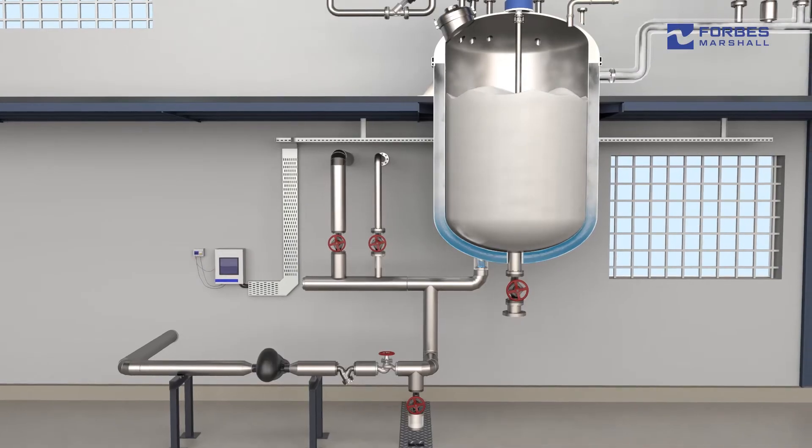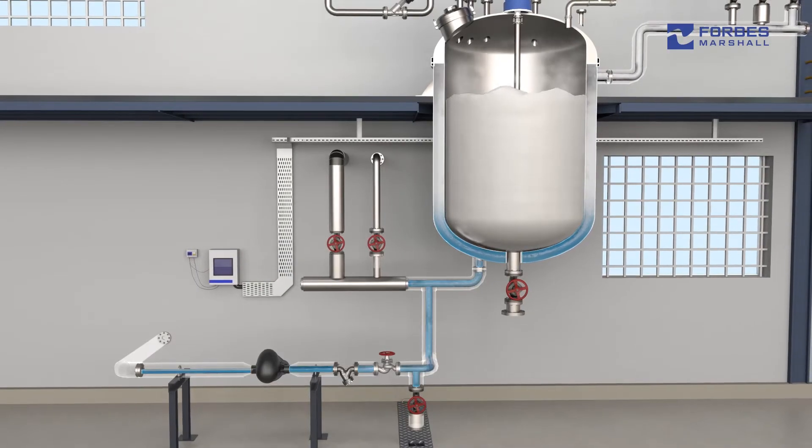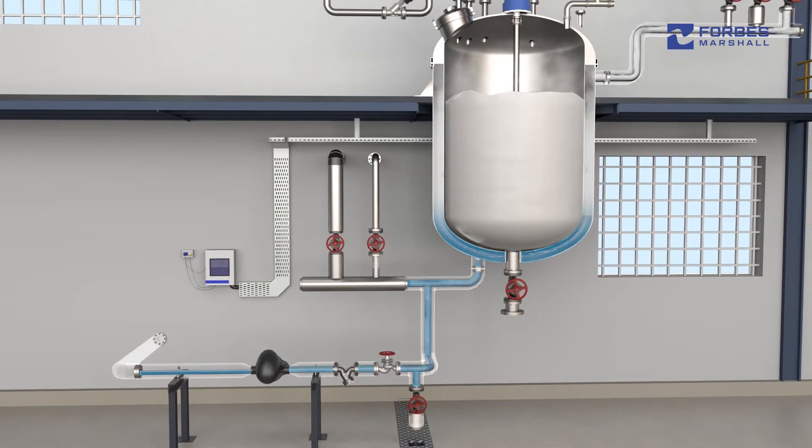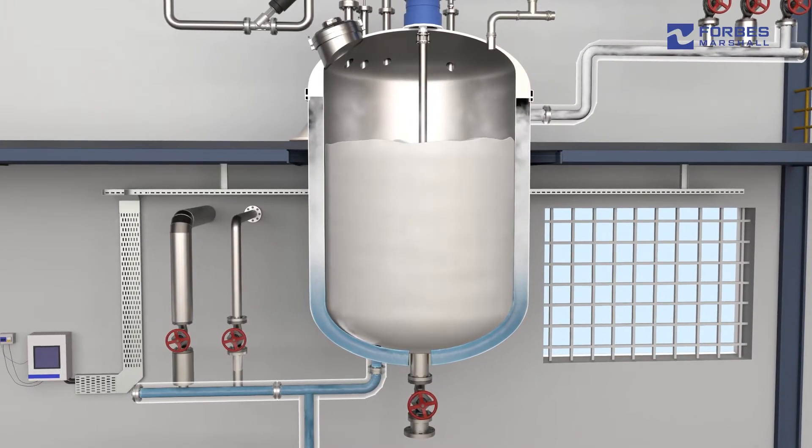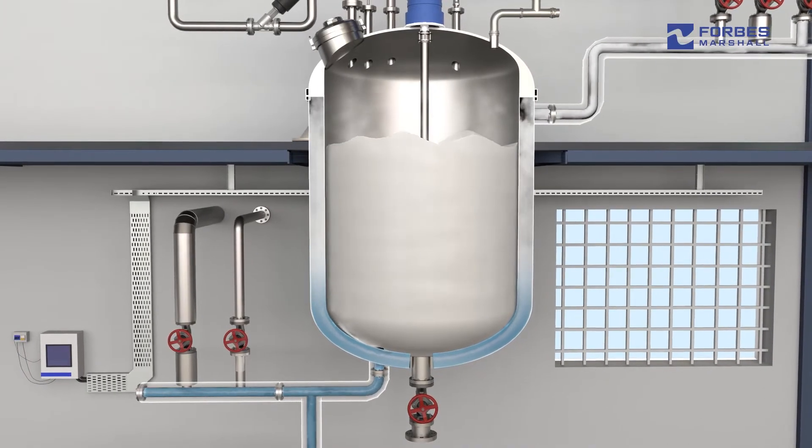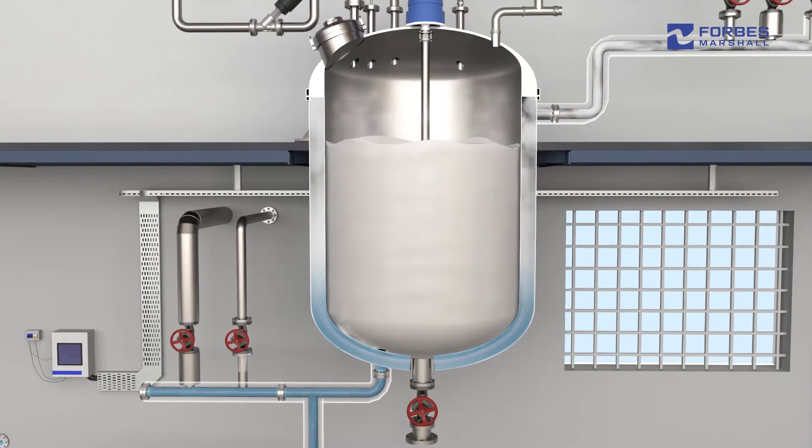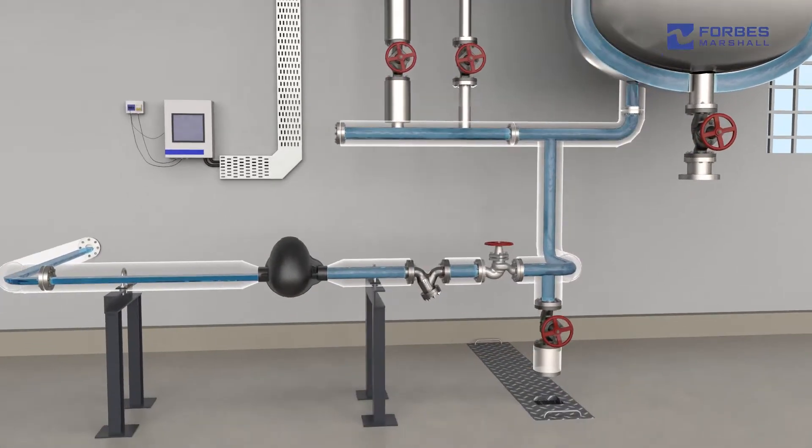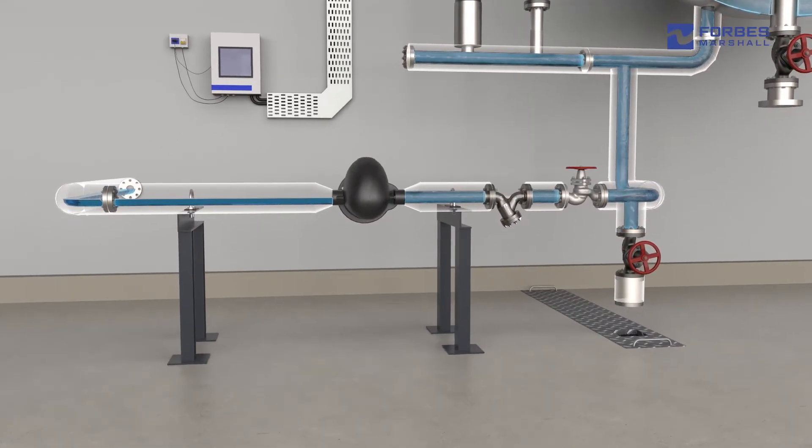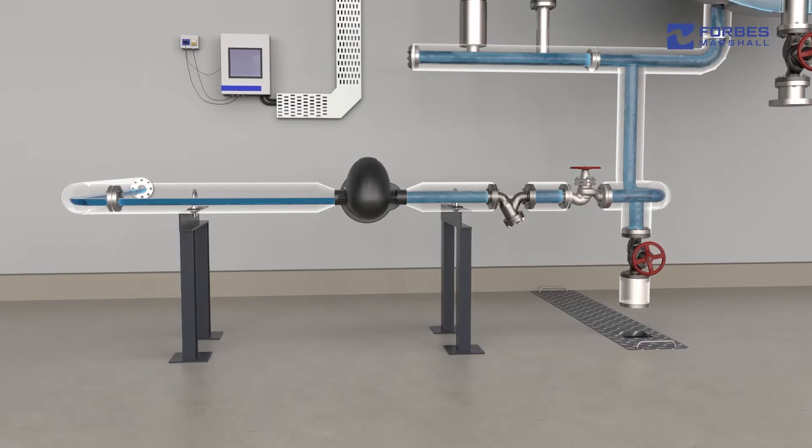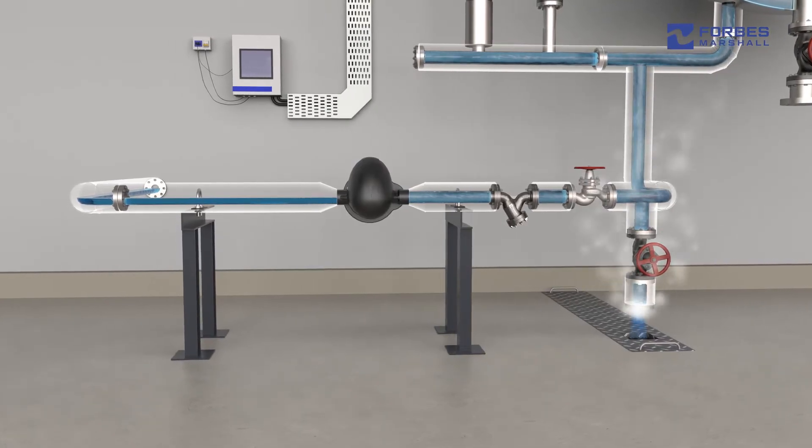Condensate which gets contaminated during changeovers is drained to the ETP or cooling tower. Steam load for these batch processes is significantly higher at startup. Conventional traps are not able to completely evacuate condensate and need to be bypassed, leading to steam loss.